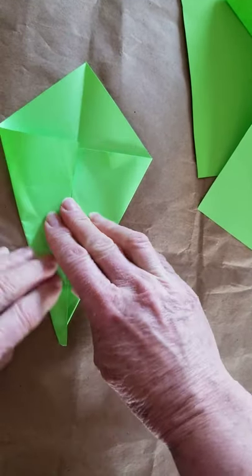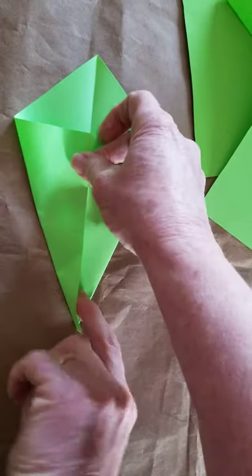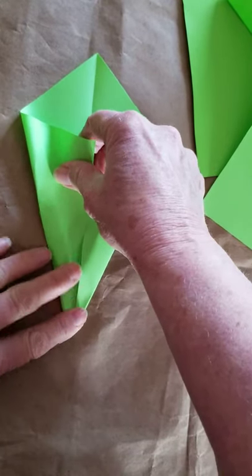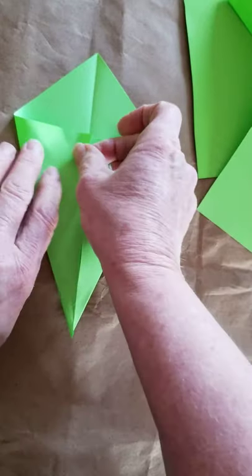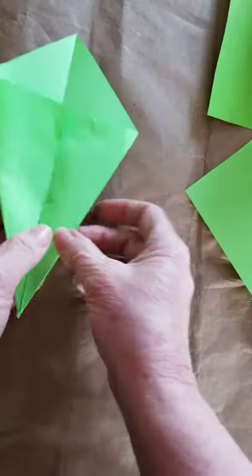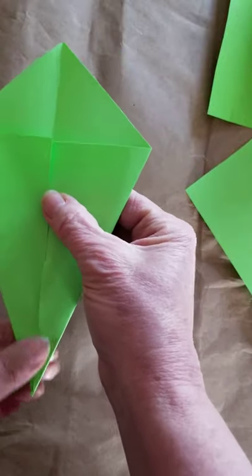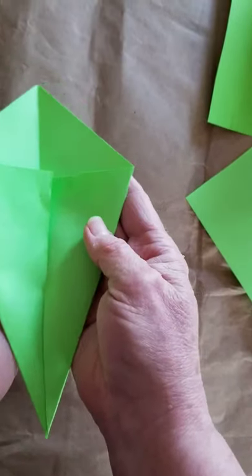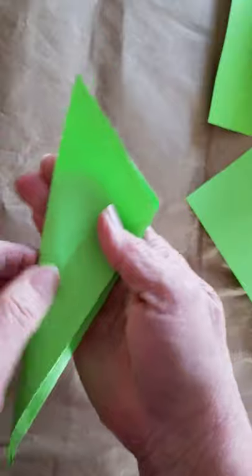And what I have then, if I do it carefully, is a piece of paper that looks kind of like a kite. That's what I want. Now I'm going to fold it in half along that center line as well.